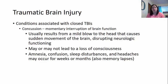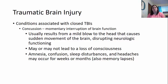Some conditions associated with closed traumatic brain injuries: the first is a concussion — a momentary interruption of brain function, lasting maybe a couple of seconds to about a minute. It usually results from a mild blow to the head, causing sudden movement of the brain and disrupting some neurological function. It may or may not lead to loss of consciousness. It could also cause amnesia, confusion, sleep disturbances, and headaches that may occur for weeks or months after the injury.